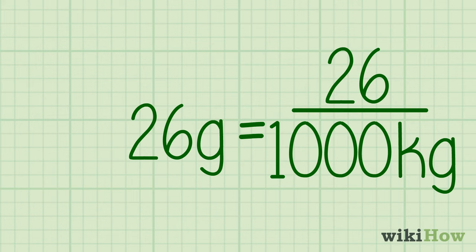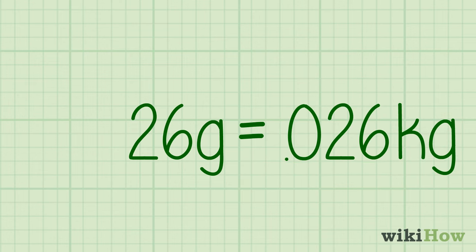To do this, first put a decimal point after the number of grams. Then move the point over three spaces to the left. Fill in any empty spaces after the decimal point and in front of your original number with a zero. For instance, 26 grams becomes 0.026 kilograms.